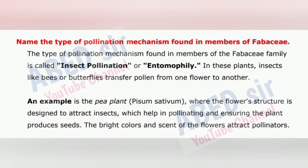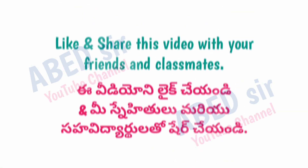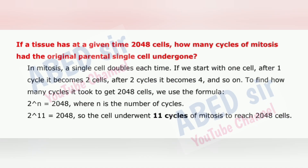Next important question: If a tissue has at a given time 2048 cells, how many cycles of mitosis had the original parental single cell undergone? In mitosis, a single cell doubles each time. If we start with one cell, after one cycle it becomes two cells, after two cycles it becomes four, and so on. To find how many cycles it took to get 2048 cells, we use the formula 2^N = 2048, where N is the number of cycles. 2^11 = 2048, so the cell underwent 11 cycles of mitosis.